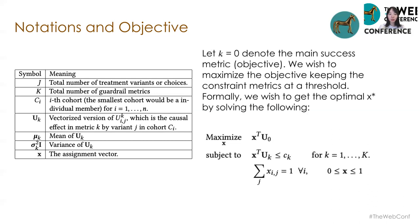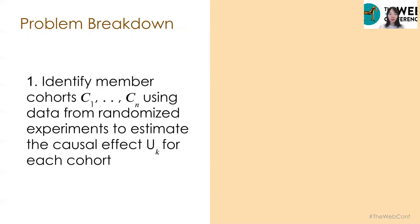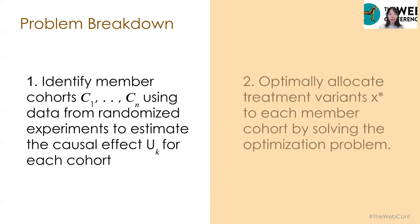k equal to 0 denotes the main success metric. We wish to maximize the objective while keeping the constraint metrics at a threshold. Formally, we wish to get the optimal x* by solving the following objective. We break down the problem into two stages. First, we identify member cohorts using data from a randomized experiment to estimate causal effects u_k for each cohort. At a member-level setup, where each member represents a cohort, we directly estimate individualized effects. At the second stage, we optimally allocate treatment variant x* to each member cohort by solving the optimization problem.